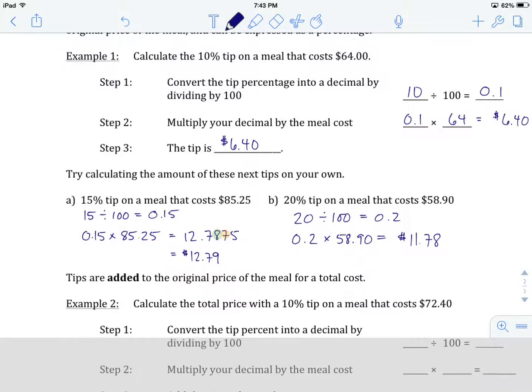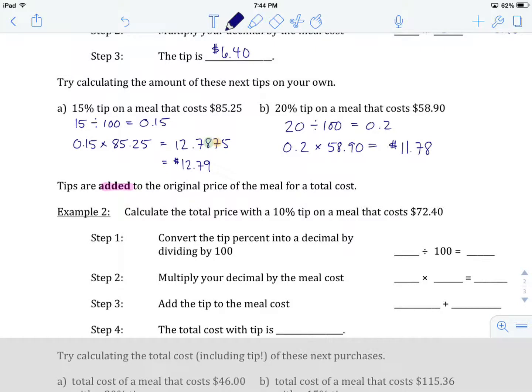So, this whole example number 1 and this A and B we've just done, that's calculating tip just by itself. But when we're actually giving a tip to somebody, what we're doing is we're taking that tip and adding it back to the original price. Tips are added back to the original price. So, you have the price of your meal, you add the tip to it to get a total that's higher than the price of the meal itself. So, let's incorporate that step here in example two. Calculate the total price with a 10% tip on a meal that costs $72.40.